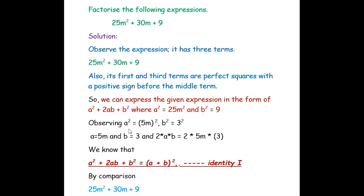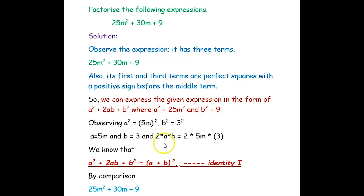So we can express the given expression in the form of a squared plus 2ab plus b squared. Comparing this, we get a squared as 25m squared and b squared as 9. From this we can find a and b: if a squared is 25m squared then a will be 5m, and if b squared is 9 then b will be 3. So 2ab will be 2 into 5m into 3.